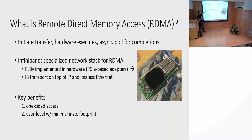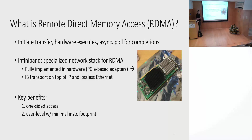InfiniBand is the most commonly used network stack that enables RDMA, and this is a picture of a Mellanox network adapter that implements InfiniBand. Of course, there are cheaper alternatives to full-blown InfiniBand — we can take the InfiniBand transport and layer it on top of IP and lossless Ethernet. That's what we refer to as RoCE.